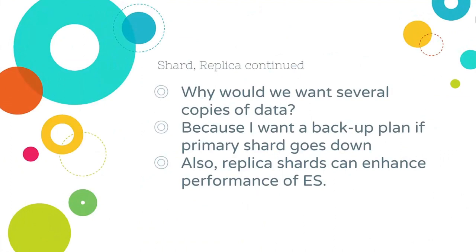Why would you want several copies of the data? Why waste precious disk space? Because you want a backup plan if the primary shard goes down, and replica shards can also enhance the performance of Elasticsearch. So the closing question: what if you put a primary shard and its replica on the same node? The answer is both will fail and you will lose your data. That is why Elasticsearch does not put the shard and its replica on the same node.